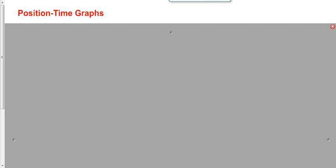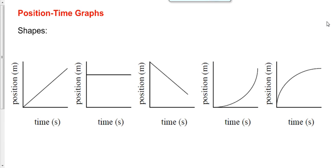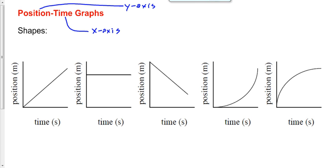What I want to do first is go over some shapes of different position-time graphs. By the way, anytime you have a graph — whether it's a position-time graph, a velocity-time graph, a force-distance graph, or a velocity versus velocity graph — the y-axis is listed first and the x-axis is listed second. So when we plot a position-time graph, position is going to be on the y-axis and time is going to be on the x-axis.